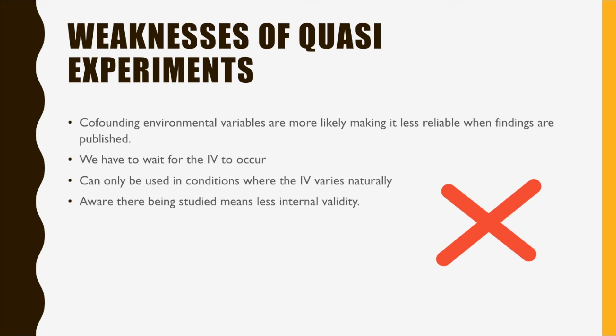Weaknesses of quasi-experiments: confounding environmental variables are more likely to make findings less reliable when published. We also have to wait for the IV to occur naturally, meaning this method can only be used in conditions where the IV varies naturally.